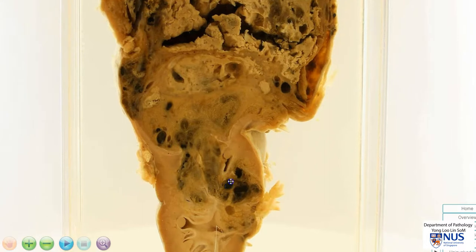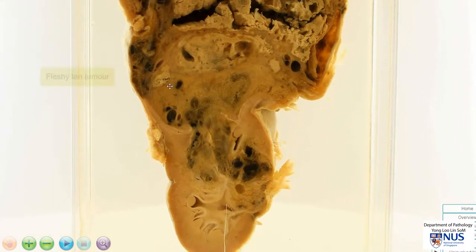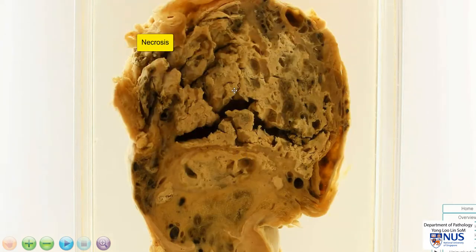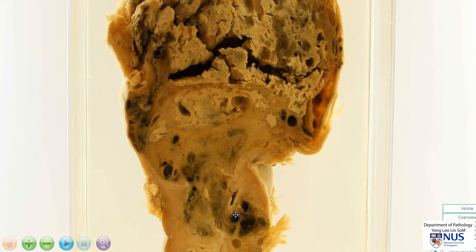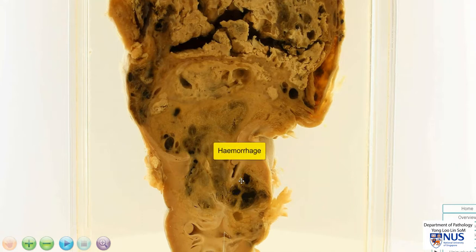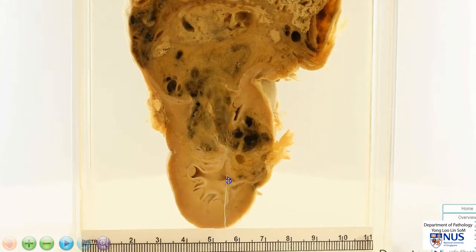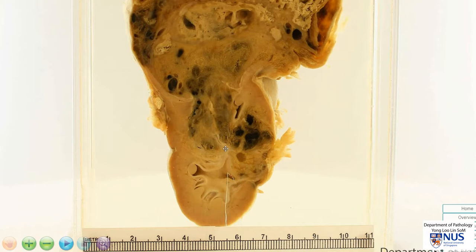Looking at this more closely, we can actually see the tumor is fleshy and tan, and it has these geographic pale areas of necrosis. In fact, in some areas the tumor is very friable and almost cavitating — all these pale areas are necrotic. We also have darker areas of hemorrhage, and the tumor is abutting the renal pelvis. We can see it is really compressing on the renal pelvis with the calyces.